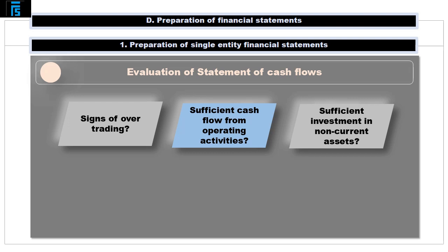Are investments in non-current assets sufficient to maintain operating capacity? This may be assessed by comparing purchases of non-current assets with the level of depreciation. If purchases are higher, then the company appears to be expanding. If the two are equal, the company seems to be investing in new assets at a pace equal to the wearing out of existing ones. If, however, purchases are lower than depreciation, the company's non-current asset base is diminishing, which is a potentially worrying sign.